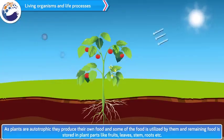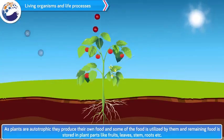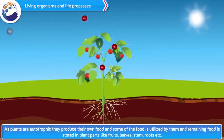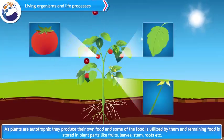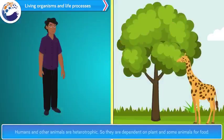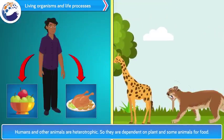As plants are autotrophic, they produce their own food. Some of the food is utilized by them and the remaining food is stored in plant parts like fruits, leaves, stems, roots, etc. Humans and other animals are heterotrophic, so they are dependent on plants and some animals for food.